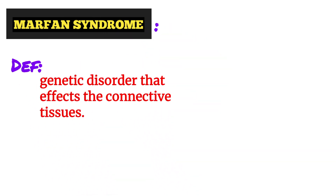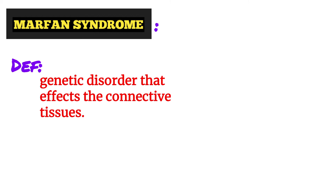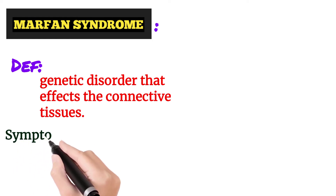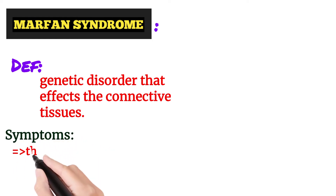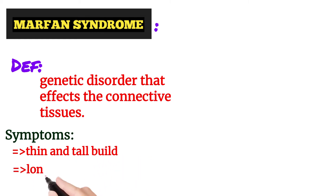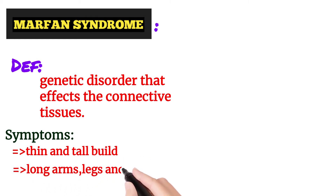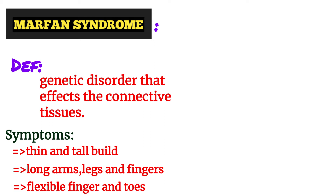Marfan syndrome is a genetic disorder that mainly affects the connective tissues. There is a mutation occurring in Marfan syndrome in the gene called the FBN1 gene, which mainly encodes the fibrillin protein.